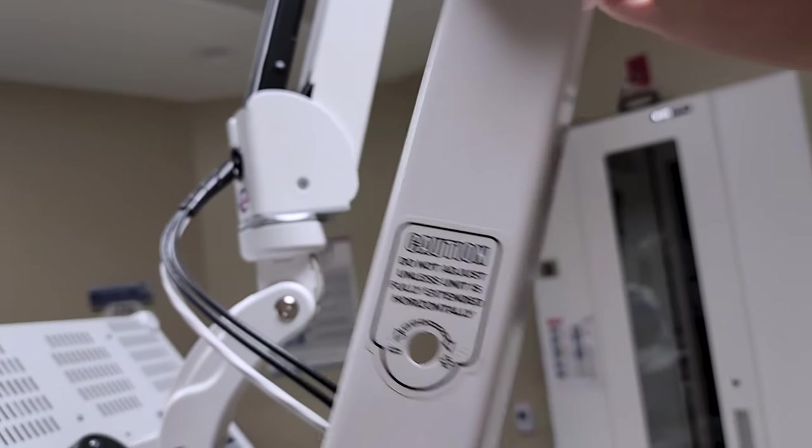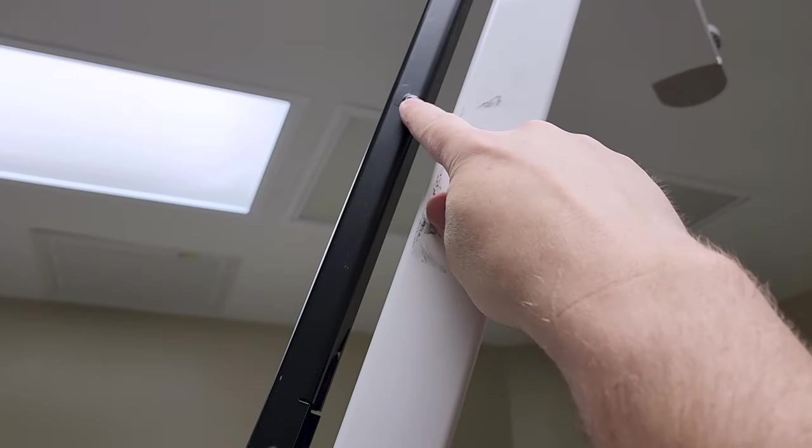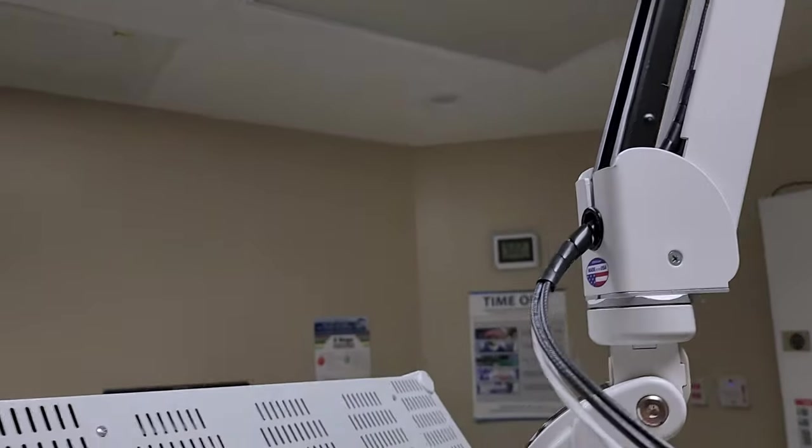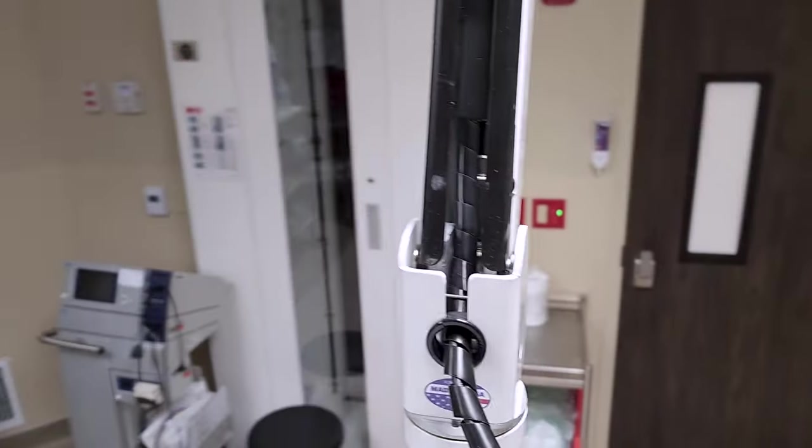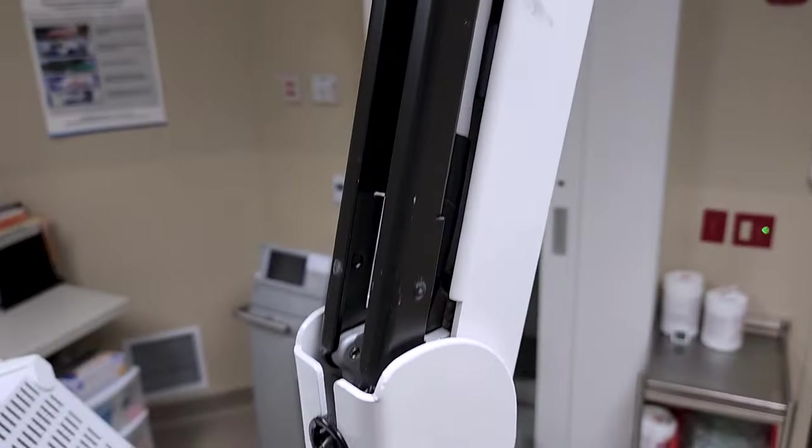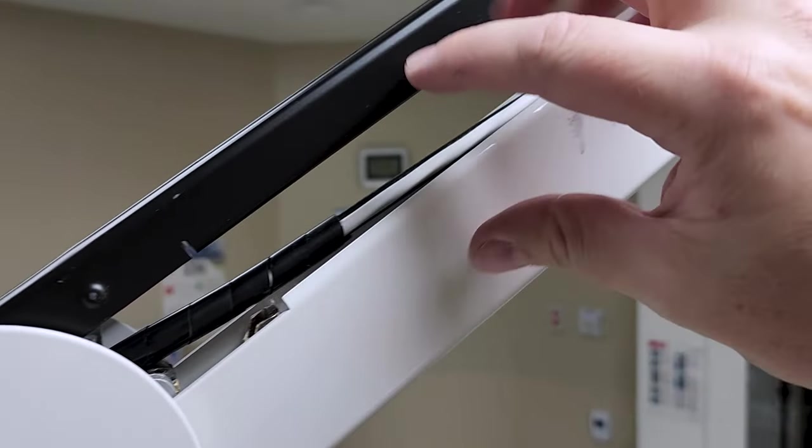So I took off two Phillips fasteners here and on the other side. I didn't need to do that in order to show you guys this, but I think it's a better demonstration with me opening it up so you can see that there are two torsion arms right here.